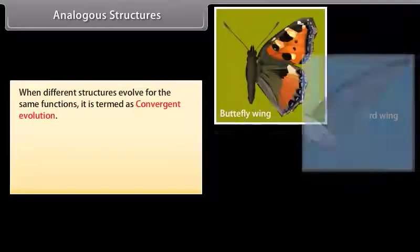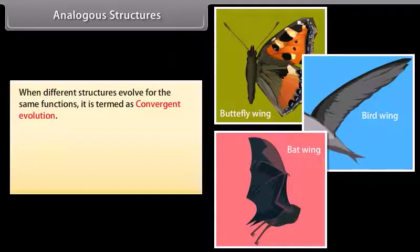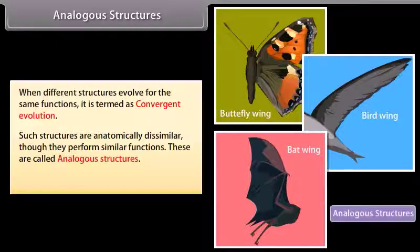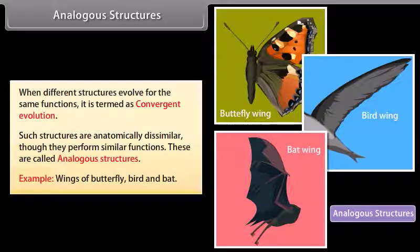Analogous structures. When different structures evolve for the same functions, it is termed as convergent evolution. Such structures are anatomically dissimilar though they perform similar functions. These are called analogous structures. Examples: wings of butterfly and bat.